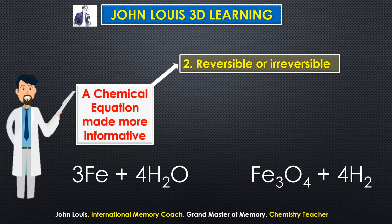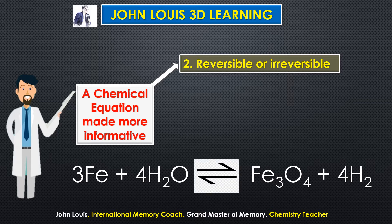Second: whether the reaction is reversible or irreversible. Let us take this equation — iron plus steam (H₂O) gives Fe₃O₄ (iron oxide) plus hydrogen. Whether this reaction is reversible or irreversible can be shown by a special symbol: one half-arrow pointing towards the product side and one half-arrow pointing towards the reactant side.